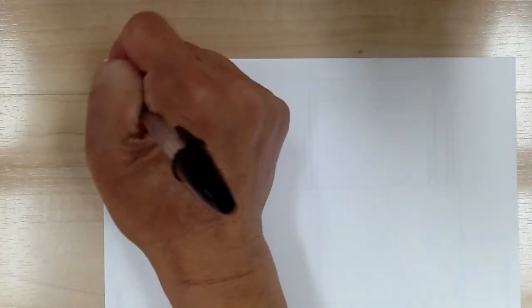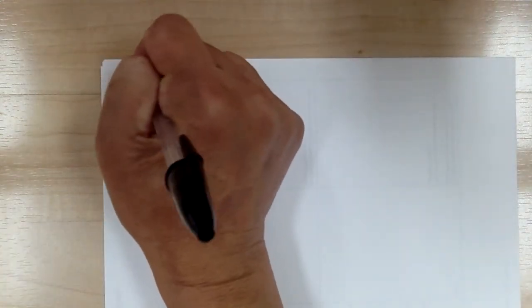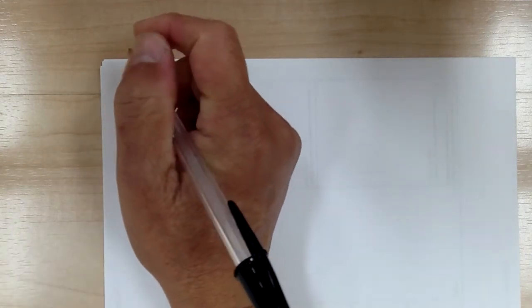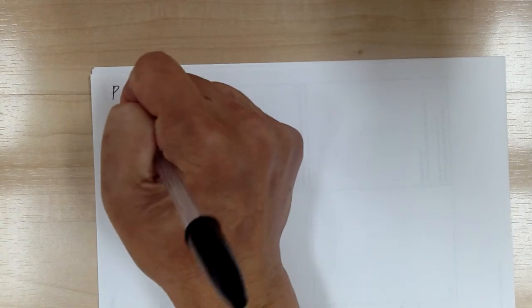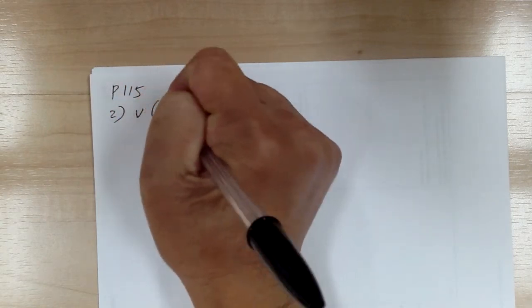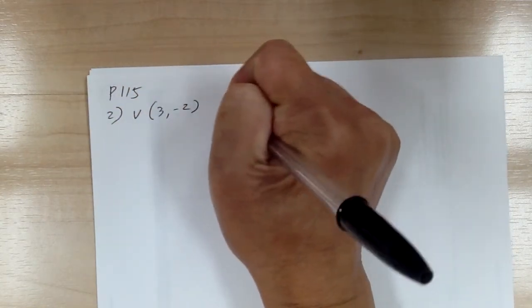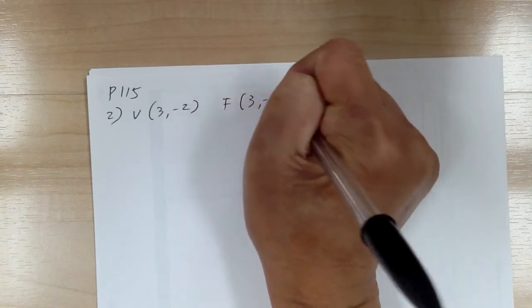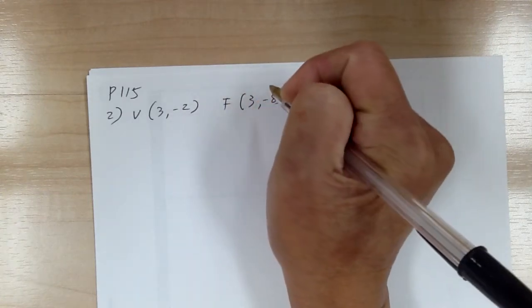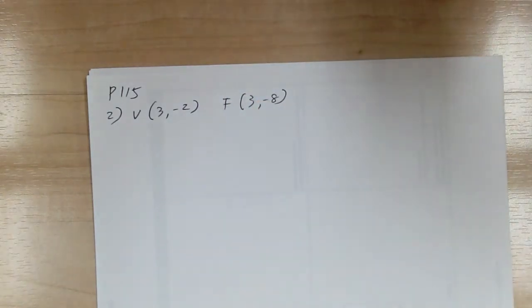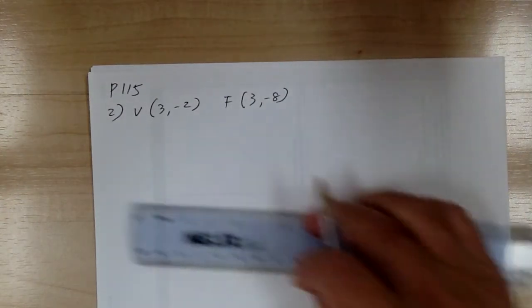Let's go to page 115, number 2. At number 2, you have the vertex at (3, -2) and the focus at (3, -8), and you're looking for the equation. So first, let's go and sketch that information.